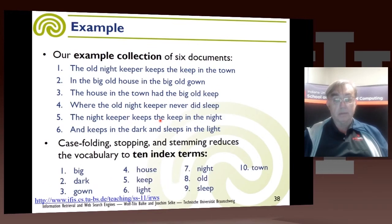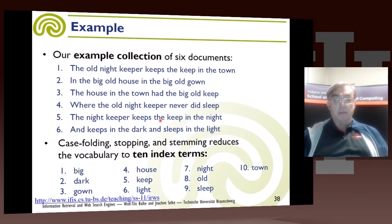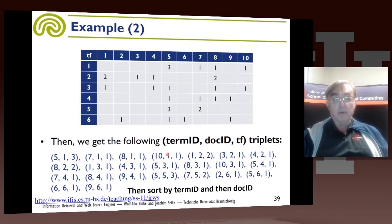Here's a simple example. We have six documents and ten terms in those documents, after we do all the reduction to normal forms. These are the ten index terms. Then we form this matrix — here are the six documents and here are the ten terms. You start off being arranged by documents, so you have everything for document 1, then 2, 3, 4, 5, 6.